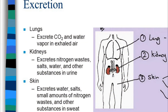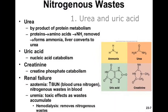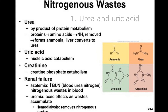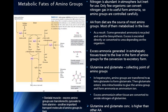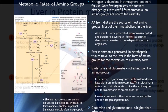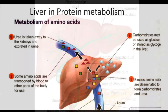Substances to be excreted: Urea and Uric Acid, i.e. nitrogenous waste. These are produced as a result of the breakdown of excessive amino acids in the liver. If allowed to accumulate in the body, these are harmful.